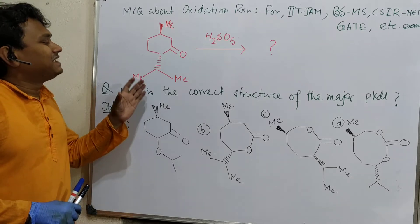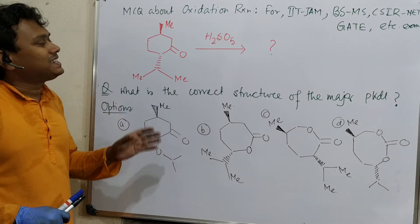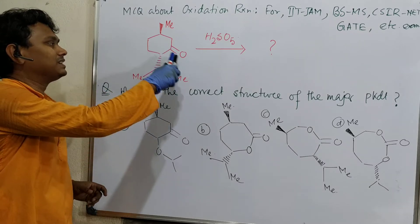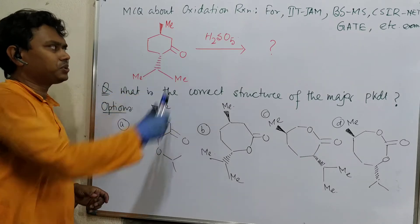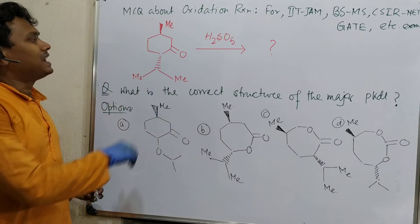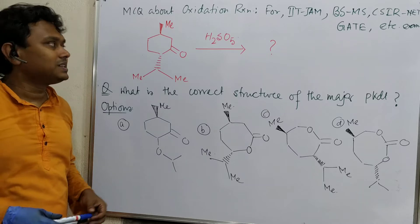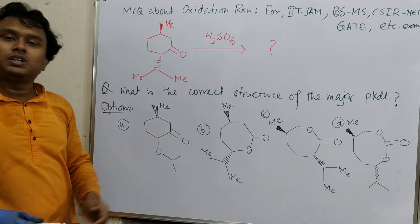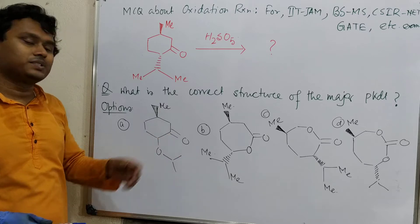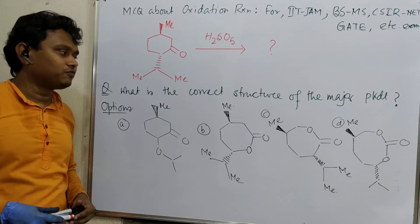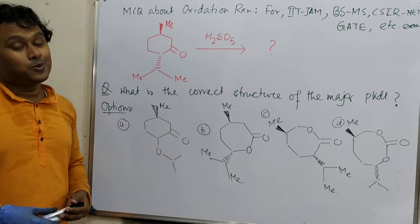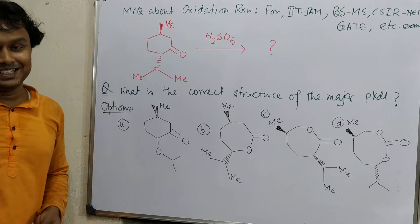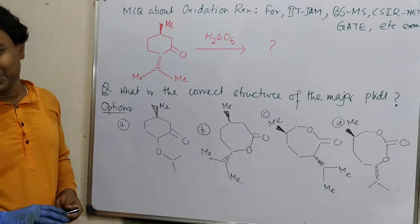And second, what is the major product of this reaction? Because this is actually a ketone — it's a natural product — and if it is treated with peroxy monosulfuric acid, what is the product? Four options are provided in front of you. You have to find out what is the major product with logical reasoning.